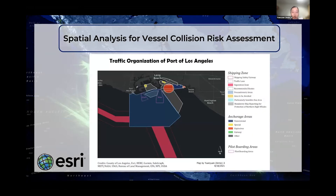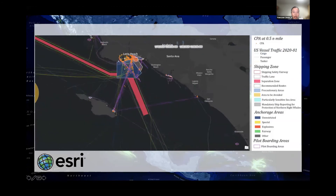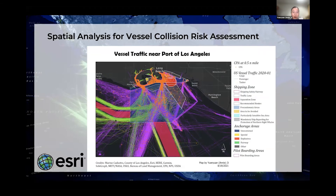I take the port of Los Angeles as an example. This is the organization of the port, where we can see the separation zone, some precautionary areas, and anchorage areas. Looking at the CPA points of the area each day, we can see some CPA points inside the port and some outside the port as well. When accumulating the CPA points over the whole month, it shows more points within the port and some CPA points outside the port.